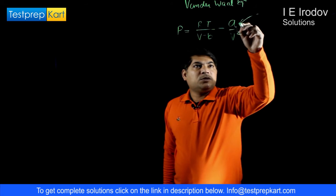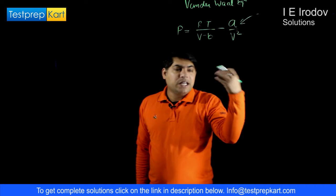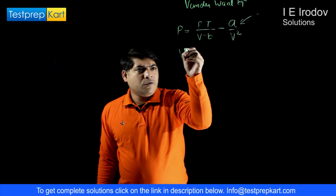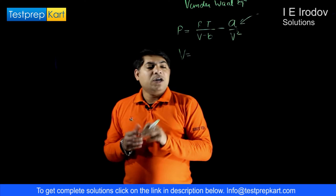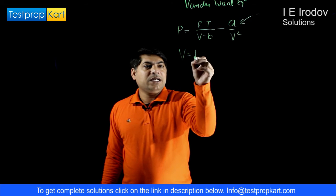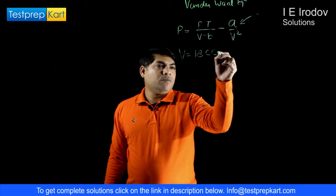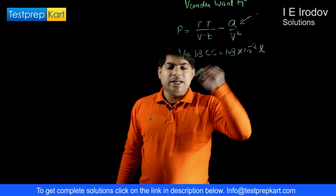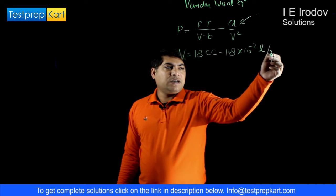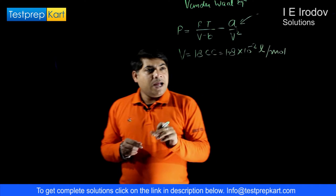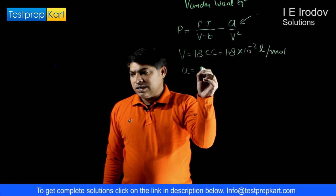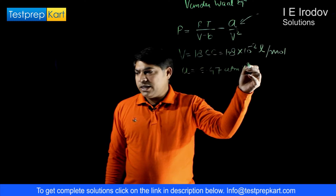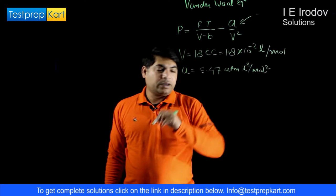The term a/V² represents intermolecular attraction. For 1 mole of water, the molar volume is 18 cm³, or 1.8 × 10⁻² liters per mole. The Van der Waals constant a is 5.47 atm·L²/mol².